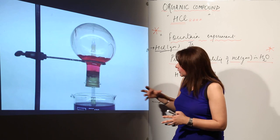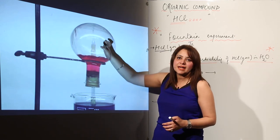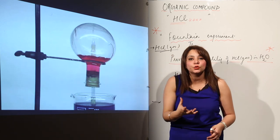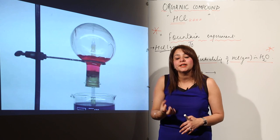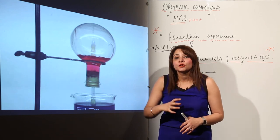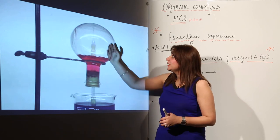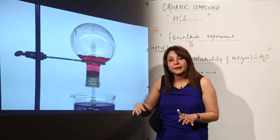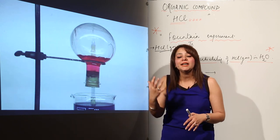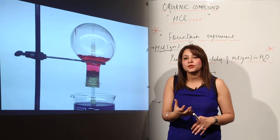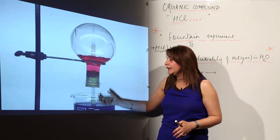When HCl gas dissolves in the water, the pressure inside the round bottom flask — which was earlier due to the gas — decreases, because less gas means less pressure. So the inner pressure falls, but the atmospheric pressure outside remains high, which forces the blue litmus solution to rise up again and again.